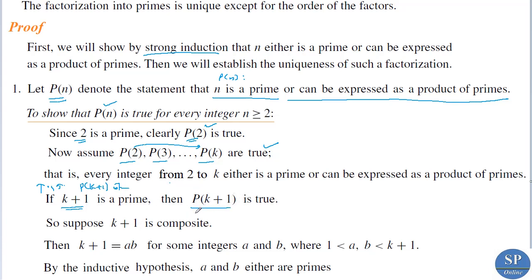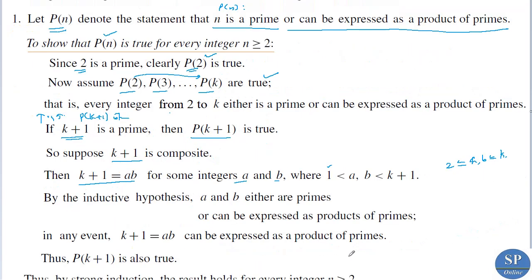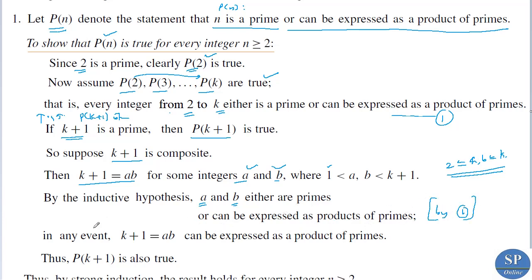Suppose k+1 is not a prime. Therefore k+1 is composite, and k+1 can be expressed as a·b for some integers a and b, where 2 ≤ a, b ≤ k. By the inductive hypothesis, we have that every integer from 2 to k is either a prime or can be expressed as a product of primes. So a and b are either primes or can be expressed as products of primes — by inductive hypothesis.